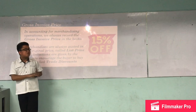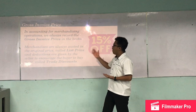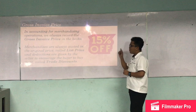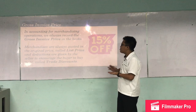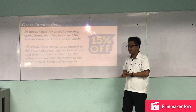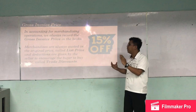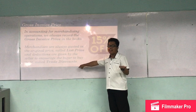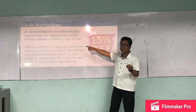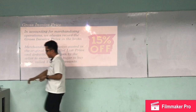In accounting for merchandising operations, we always record the gross invoice price in the books. Merchandise is always quoted at the original price, called the list price. Deductions given by the seller to encourage buyers to purchase more are called trade discounts. From the list price, less the trade discount, gives us the gross invoice price, which is what we record in the books.